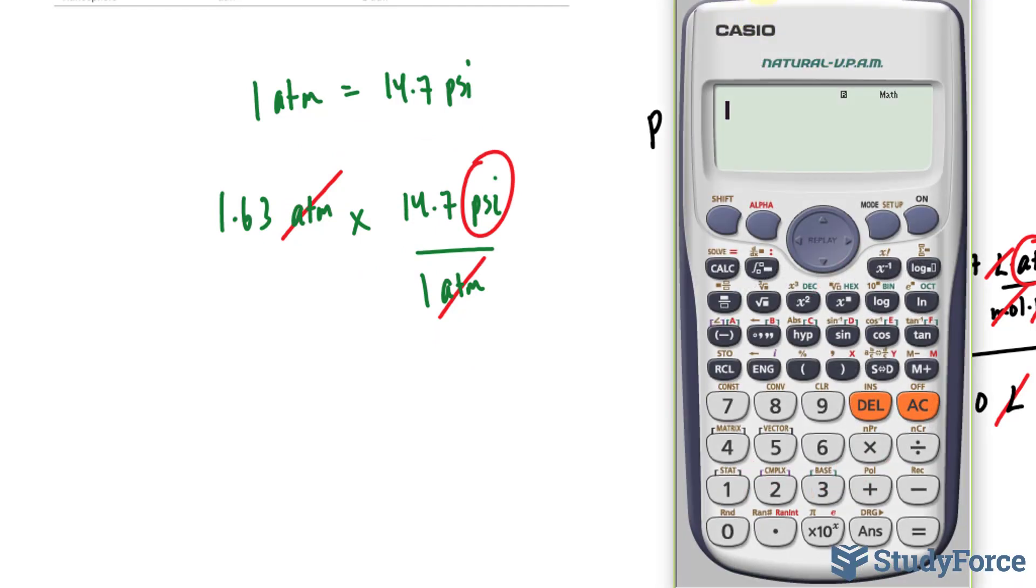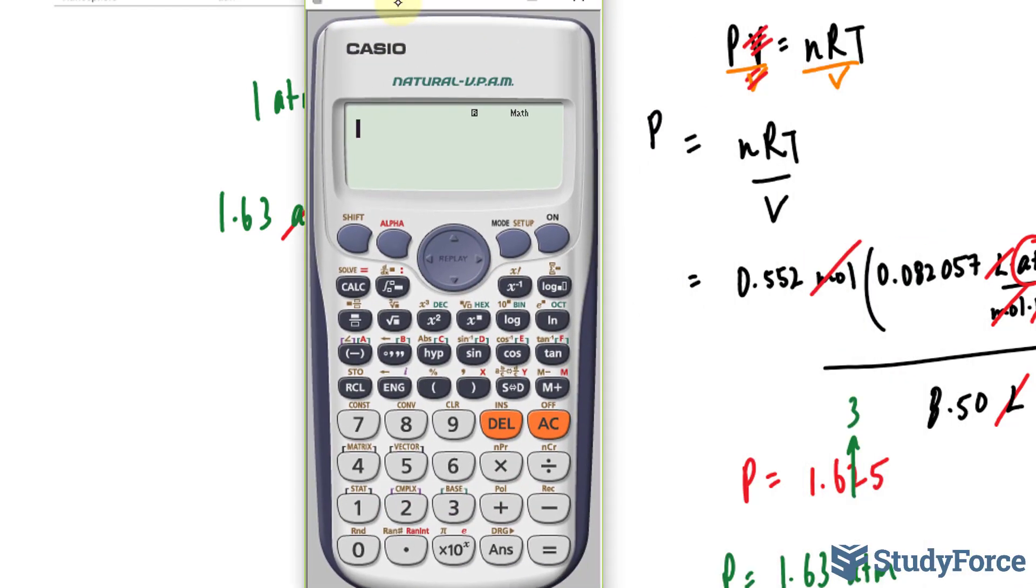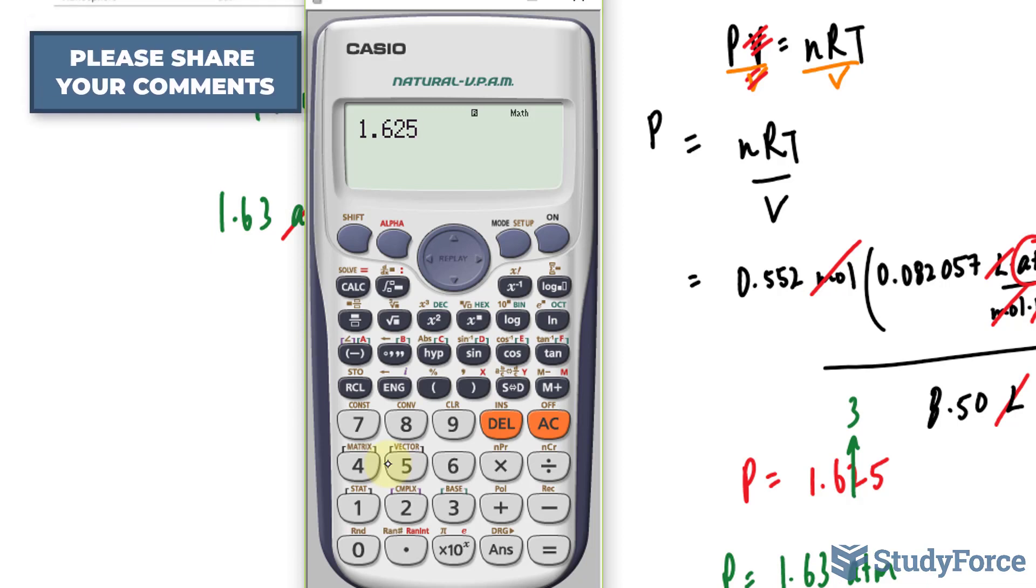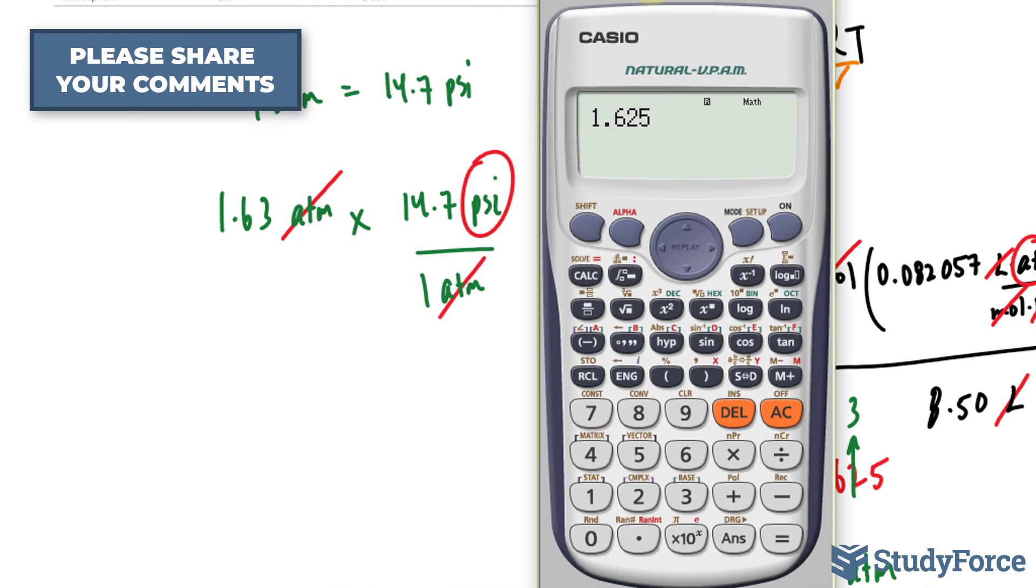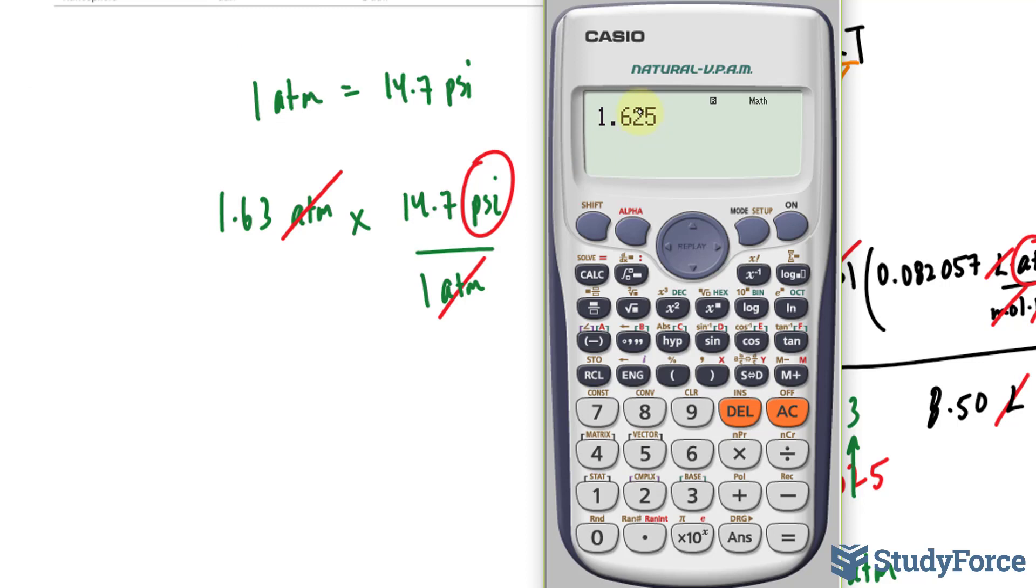Now, using our calculator, I'm not going to use the rounded version of the atmospheres, which I got over here, 1.63. I'm going to use the non-rounded version, which was 1.625, and I'm only doing that to prevent any sort of rounding errors that I come across. So by multiplying it by this number, 14.7,